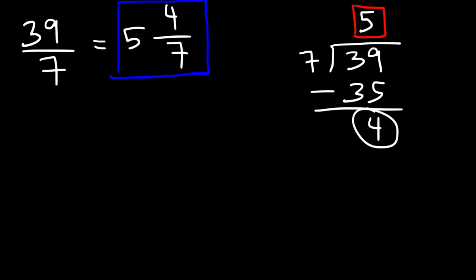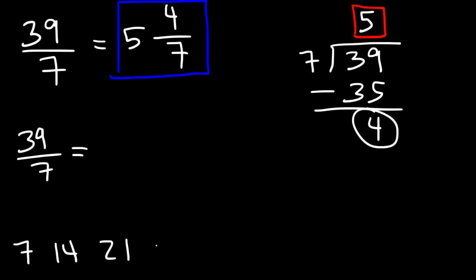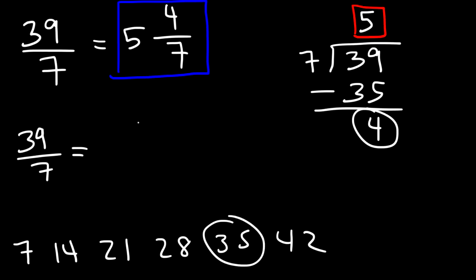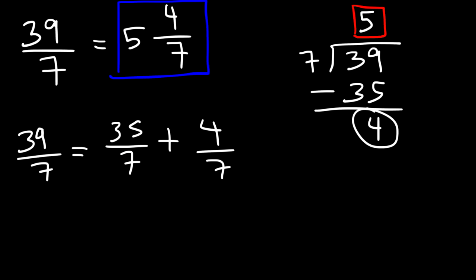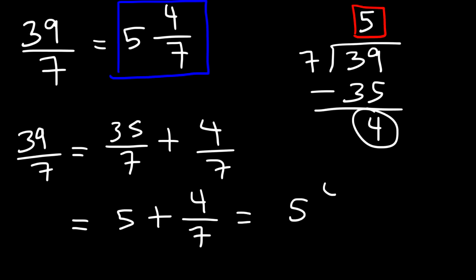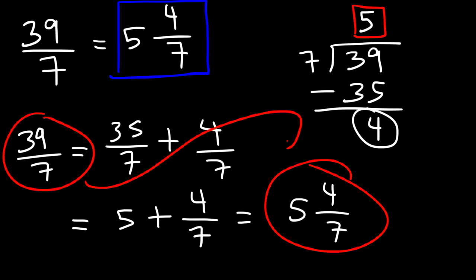That shows that thirty-nine over seven equals five and four-sevenths. The other way is to split it into two fractions: the highest multiple of seven just below thirty-nine is thirty-five, so write thirty-five over seven as the first fraction. Subtract to find the remainder: thirty-nine minus thirty-five is four. Then thirty-five divided by seven is five, and five plus four-sevenths is five and four-sevenths.